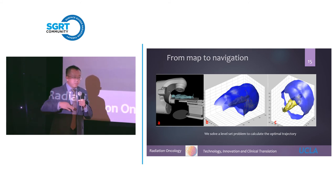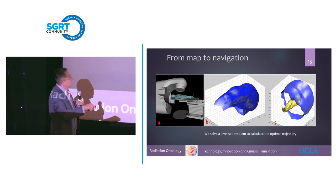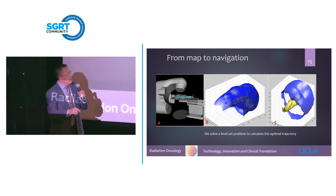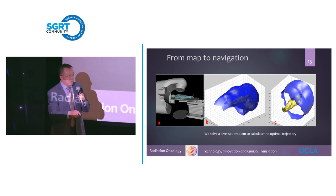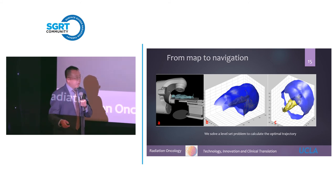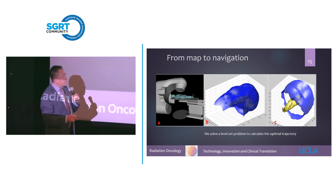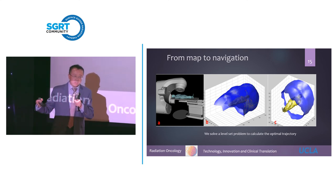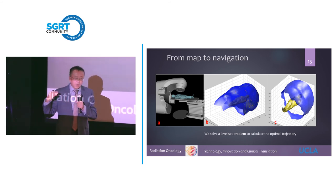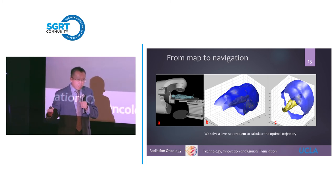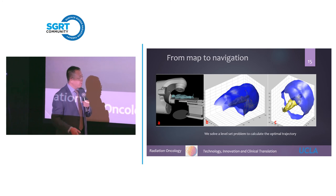Once we have the collision surface mapped out, we create what we call a 'cocoon' in our program. This cocoon describes where you can send the beam in to treat a certain tumor. Once you have the cocoon surface, you can navigate on it — for example, connecting 20 non-coplanar beams. We develop algorithms to calculate an optimal trajectory, optimizing based on total travel time, minimization of couch travel, gantry travel, or any particular parameter.